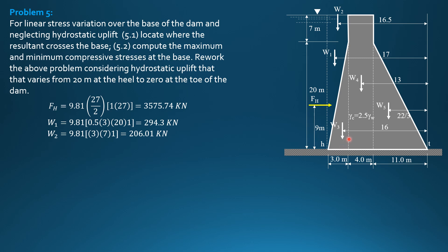Weight 3 is masonry. So this is 2.5 of 9.81 times quantity 0.5 times 3 times 20 times 1.